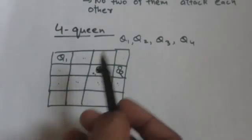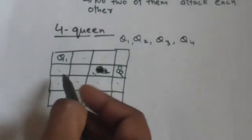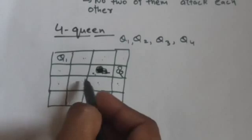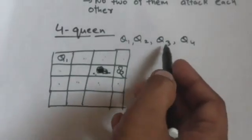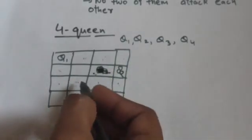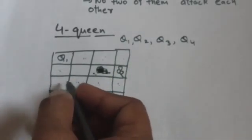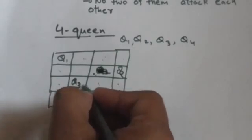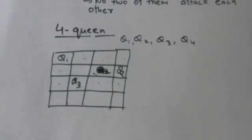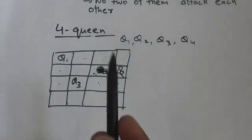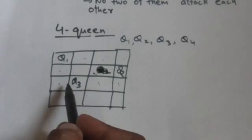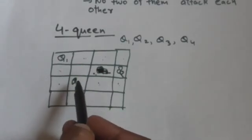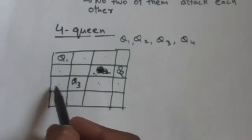For queen Q3 in the third row, we have only one option — we place Q3 in that square. So queen Q3 is placed in the third row.